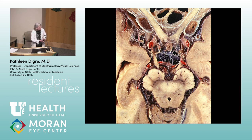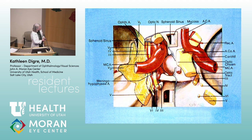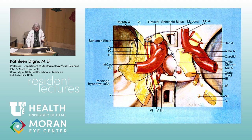In this breakaway drawing of the cavernous sinus, you can see how the third nerve traverses alongside the internal carotid artery, sitting very close by the fourth nerve and by V1 — the first division of the fifth nerve — before it enters into the superior orbital fissure.